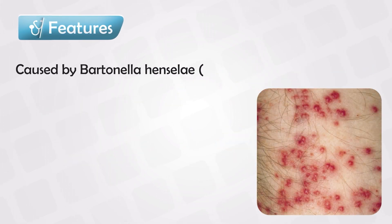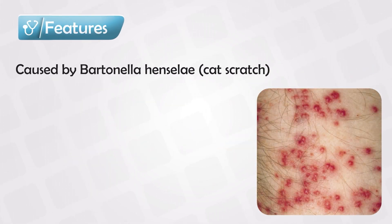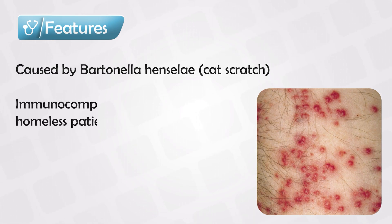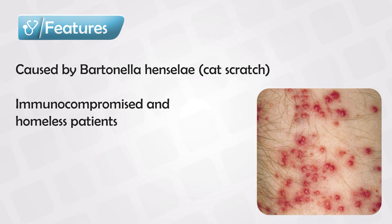Bacillary angioma or bacillary angiomatosis is caused by an infective organism known as Bartonella. This infective organism is often introduced into the skin by cat scratches. We see it often in immunocompromised patients or homeless patients, often at the age of 25 all the way to 50 years old.